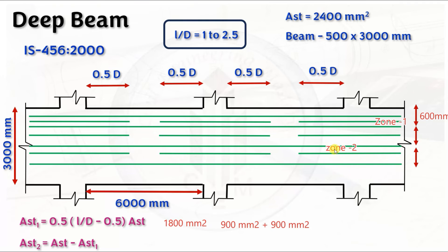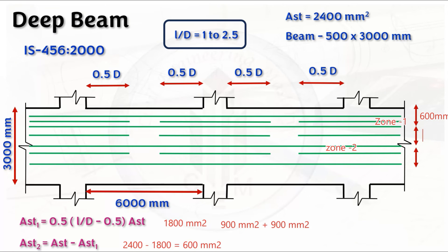For Zone 2, the remainder is Ast − Ast1 = 2400 − 1800 = 600 mm². This 600 mm² of steel is provided in Zone 2, which spans 0.3 × 3000 = 900 mm on either side of the mid-depth. So 600 mm² is distributed evenly in that zone. This is how we distribute the negative reinforcement from the top tension face.